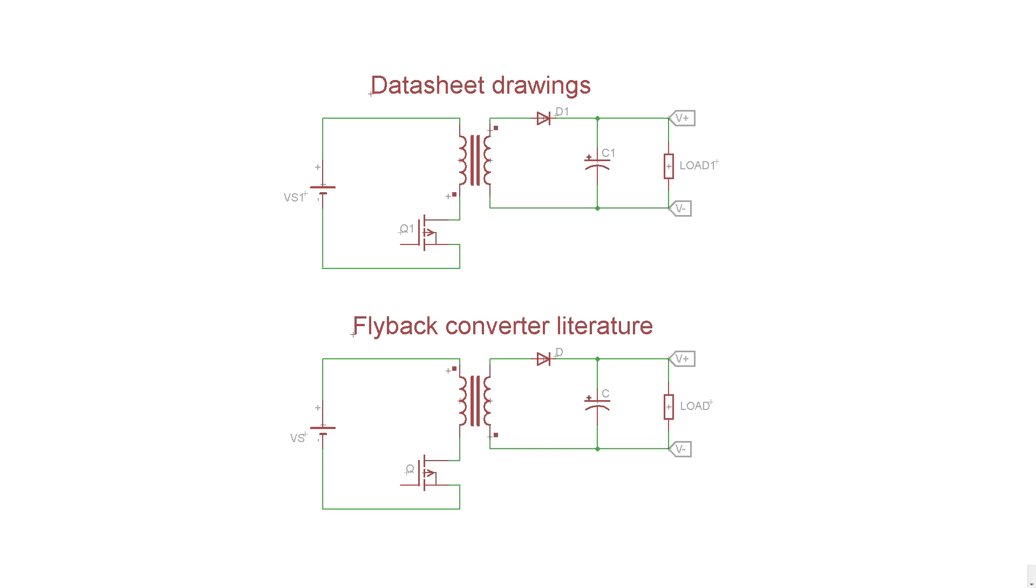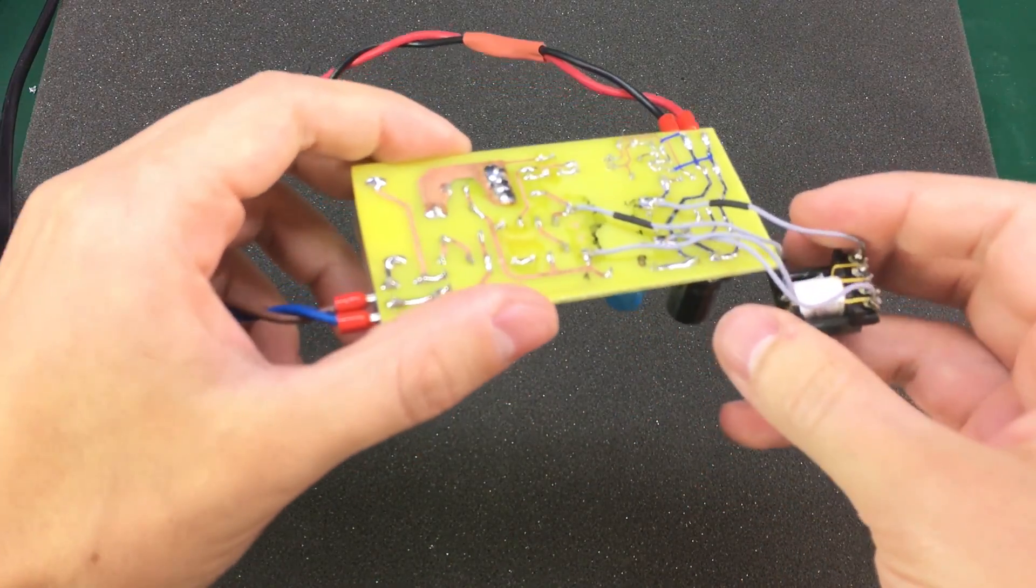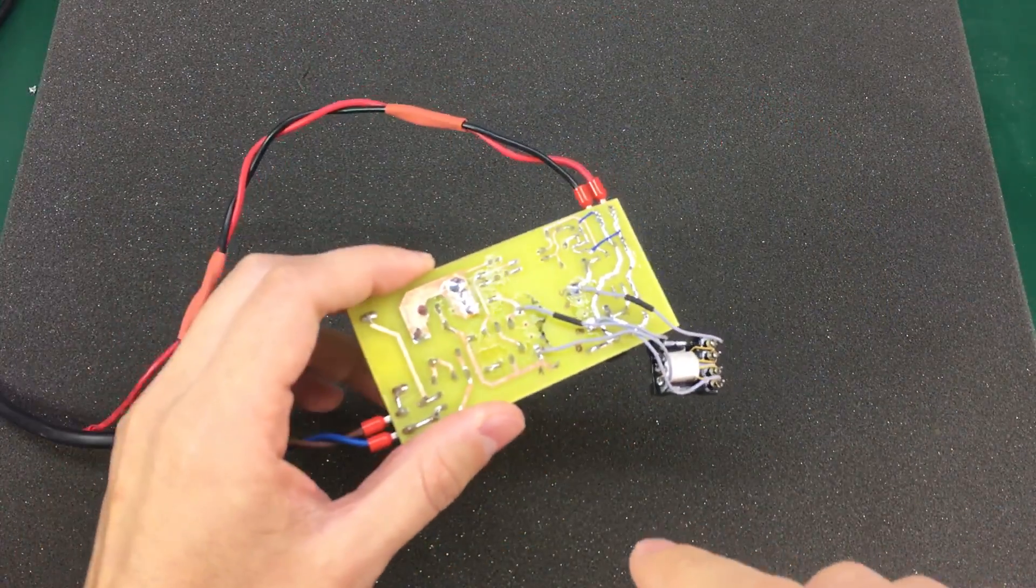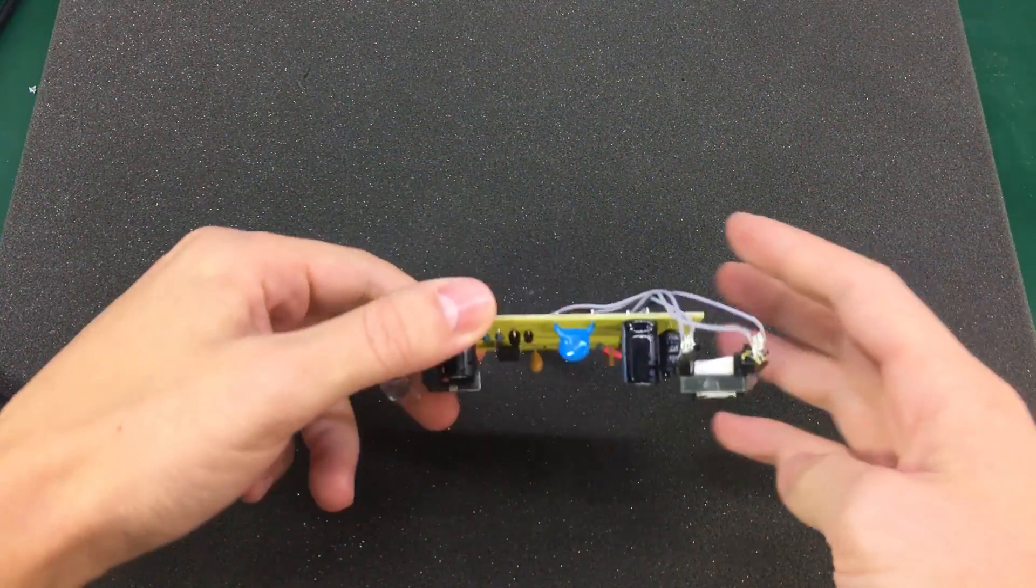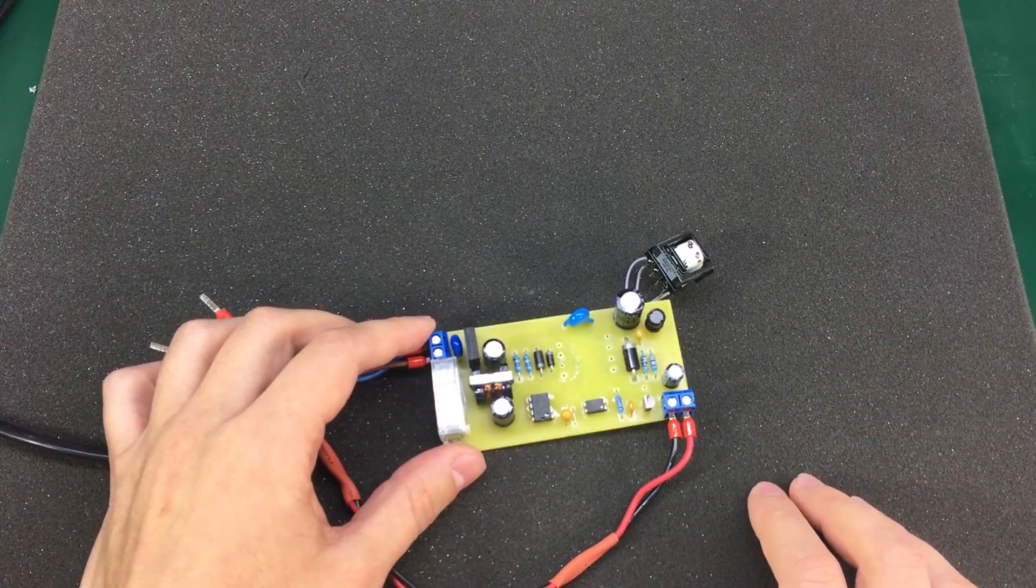So the first thing I did was to solder some wires to my transformer, as you can see here, so that I can try it in different combinations. But that didn't help. The circuit was behaving the same, no matter how I connected the transformer.